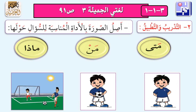العيد في أماكن كثيرة. أصل الصورة بالأداة المناسبة للسؤال حولها: متى؟ من؟ ماذا؟ يا أحبابي، هذه أدوات الاستفهام، ونحن نستخدمها للسؤال حول شيء معين. فالوقت يحتاج إلى متى؟ والإنسان نستخدم معه من؟ أما ماذا؟ فنستخدمه للأشياء.